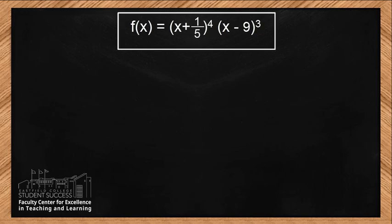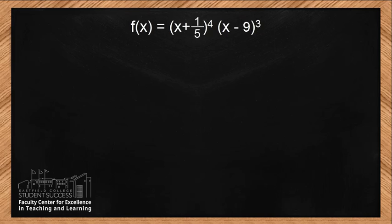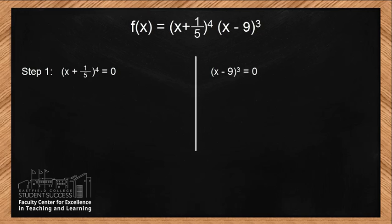First and foremost, notice that this particular function is already in factored form. If the function is not in factored form, we would need to factor it to find our zeros. However, since our function is already factored, for step number one, we will take each and every factor and set them equal to zero: x plus one-fifth to the power of 4 equals zero, and x minus 9 to the power of 3 equals zero.